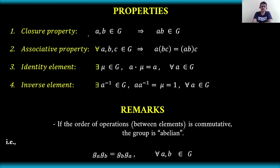The first property is the closure property: if A and B are elements of the group — we can think of them as members of the group — then the product of A and B is also an element of the group. The combination of A and B remains within the group.